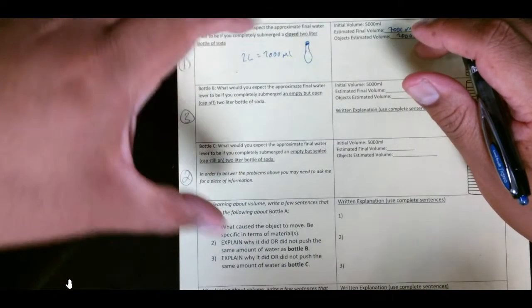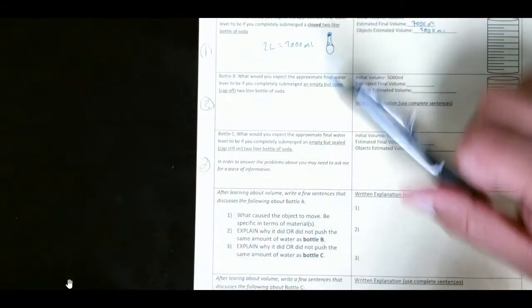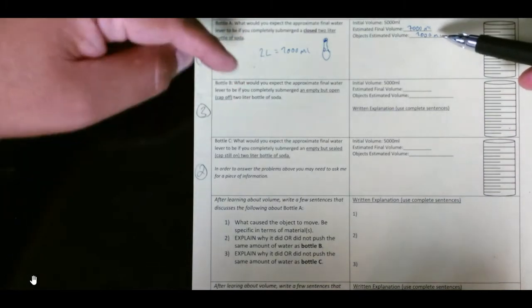So what do we estimate the object's volume to be? Your initial estimate is probably 2,000 mL. Okay, so then we skipped over to this one. You had an empty but sealed, so this had soda inside of it.